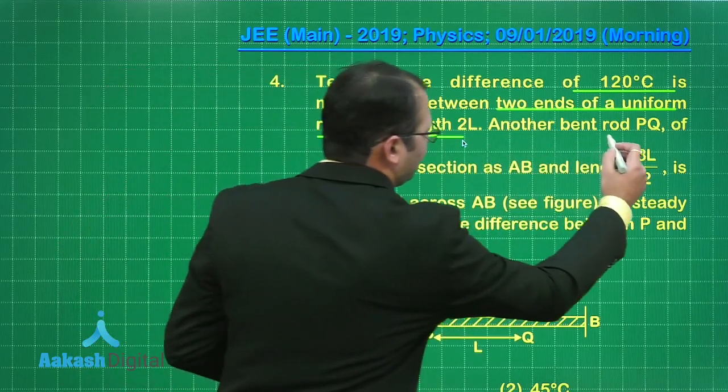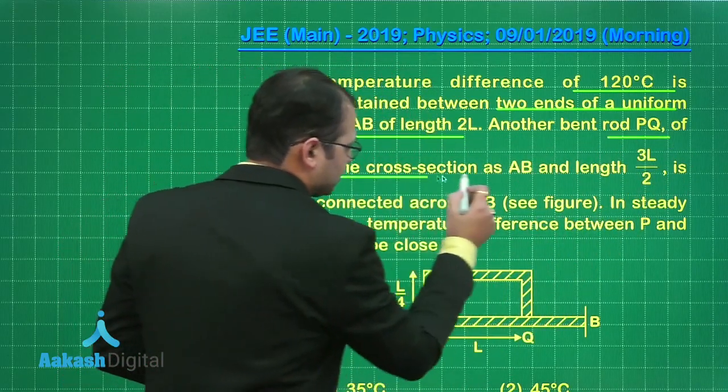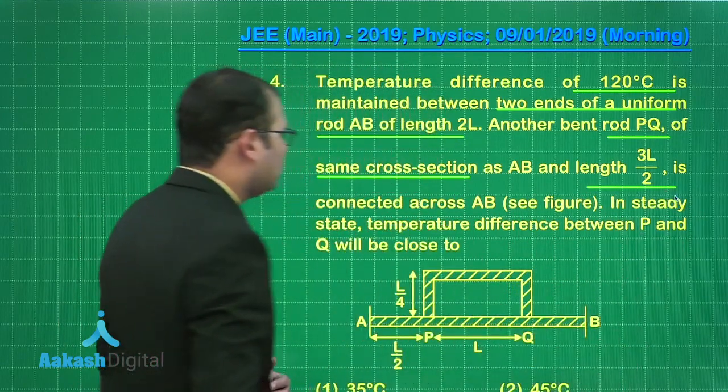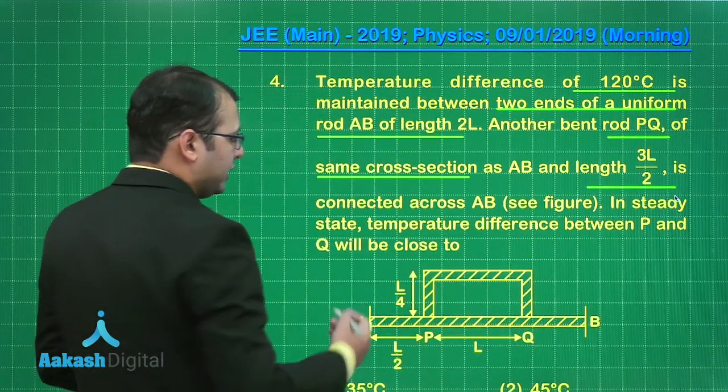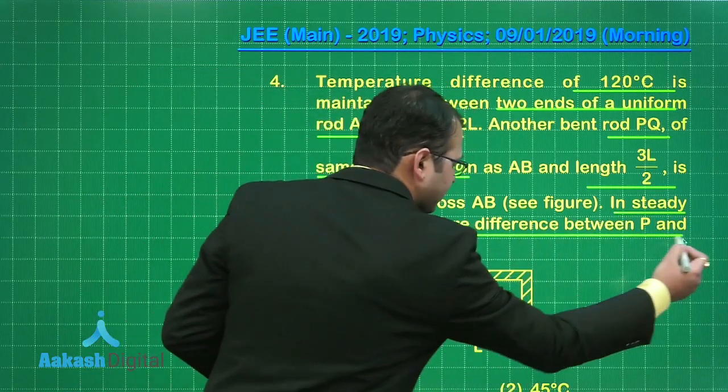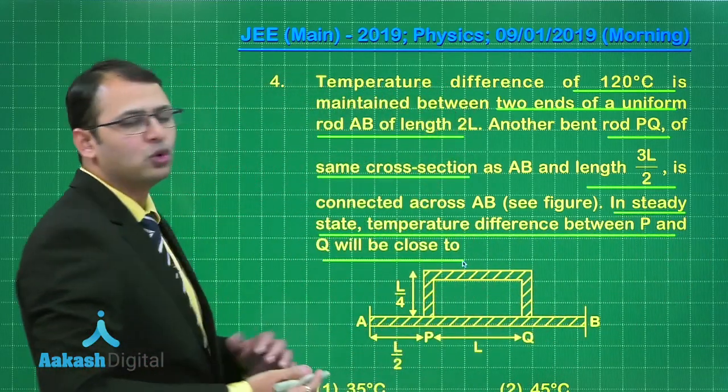Now in this, another bent rod PQ of the same cross-section of length 3L by 2 is connected as you can see L by 4, L, and L by 4. In steady state, the temperature difference between P and Q will be close to.